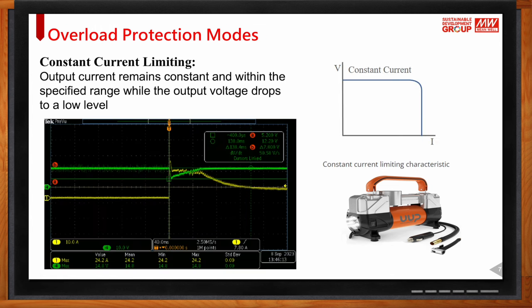The second mode is called constant current limiting. Unlike hiccup mode, when an overload occurs, the power supply does not shut down immediately — it waits three to five seconds. This gives the load a chance to build up at startup. An example using a power supply with constant current limiting to power a pump: it is able to turn on the load, although there may be some ripple in current and voltage due to the high starting current.